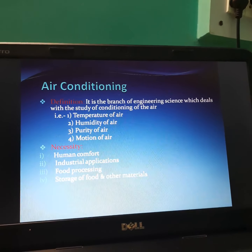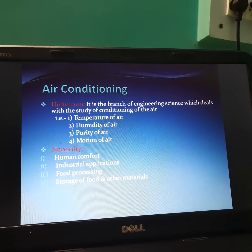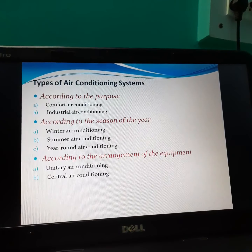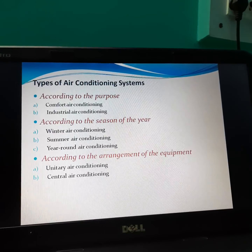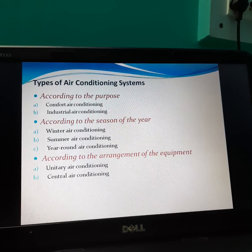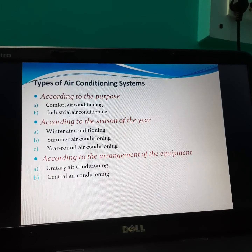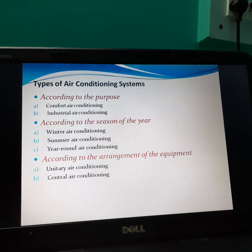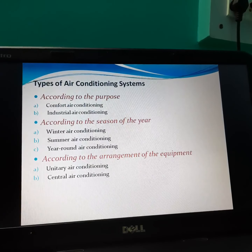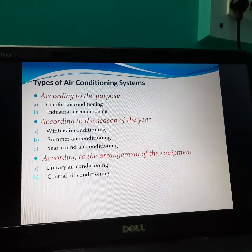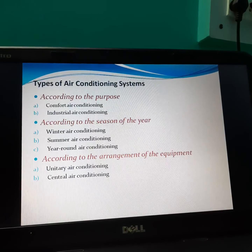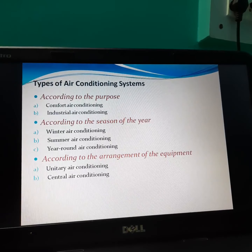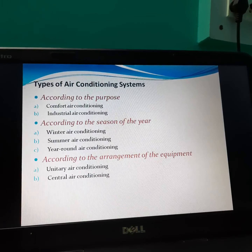Types of air conditioning systems: according to purpose, it is classified as comfort air conditioning and industrial air conditioning. According to the season of the year, it is classified as winter air conditioning, summer air conditioning, and year-round air conditioning. According to the arrangement of equipment, it is classified as unitary air conditioning and central air conditioning.